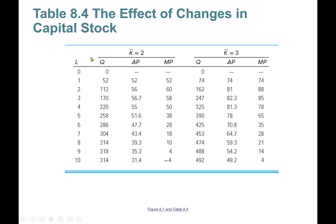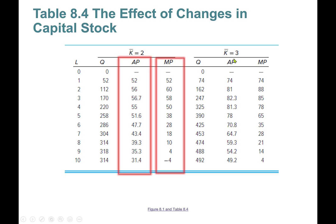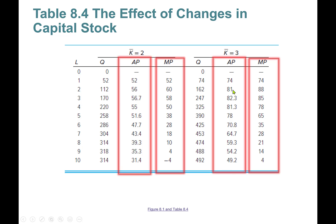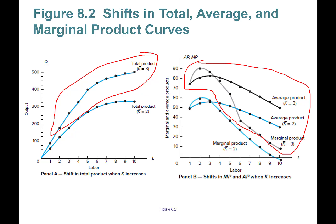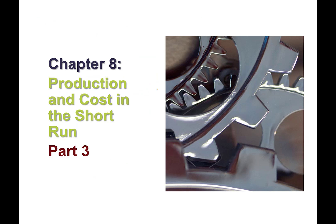The effect of changes in capital stock: we drew average product and marginal product curves based on two units of capital. If we hire three units of capital instead, the marginal and average product curves both shift up. Total product curve also shifts up with three units of capital. Capital is fixed in the short run, but we're learning how to calculate different output levels for different fixed levels of capital. See you in Part 3.